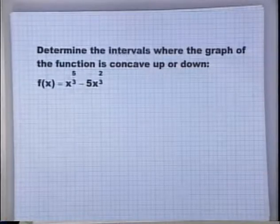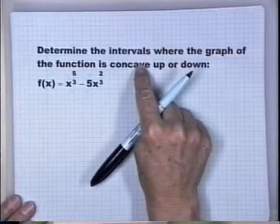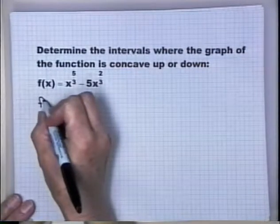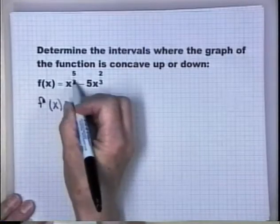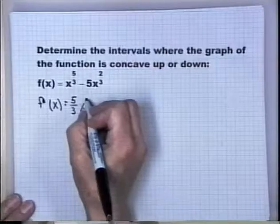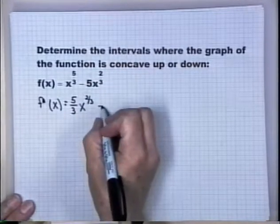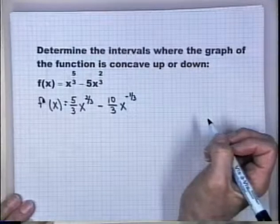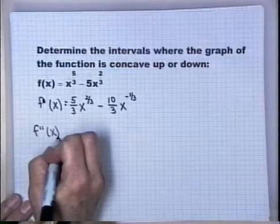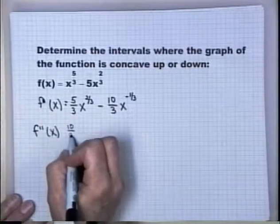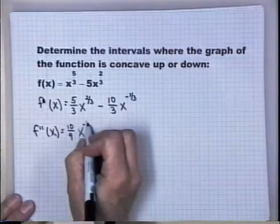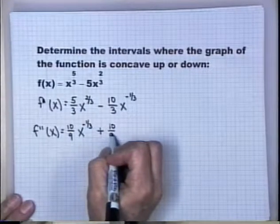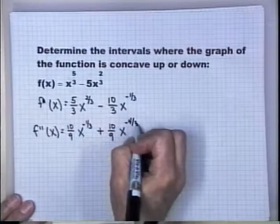Next example: determine the intervals where the graph is concave up or down. Since we want concavity, we go to the second derivative — but we need the first derivative first. The first derivative is (5/3)x^(2/3) - (10/3)x^(-1/3). The second derivative is (10/9)x^(-1/3) - (10/9)x^(-4/3). Taking the derivative here is not difficult, but I chose this example because some students have trouble finding values of x that make this zero or undefined.